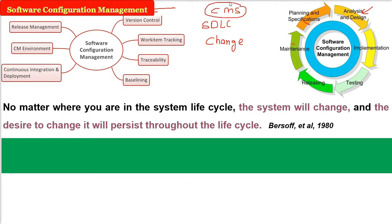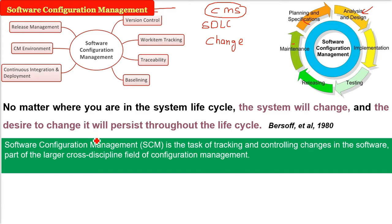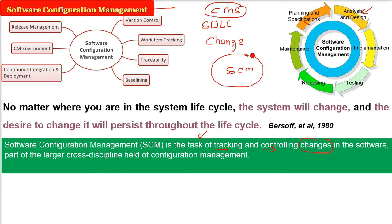There is always a configuration management software that deals with it, but we need to understand what this software is doing. Software configuration management is the task of tracking and controlling changes in the software — tracking, controlling, reviewing, and managing the changes. It is part of a bigger set called configuration management.